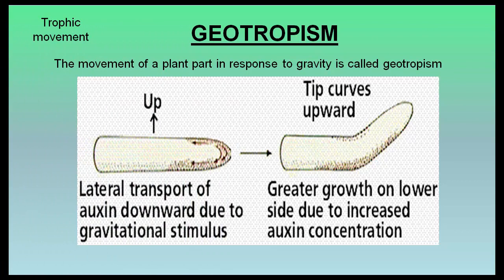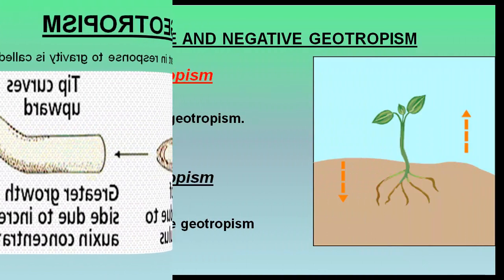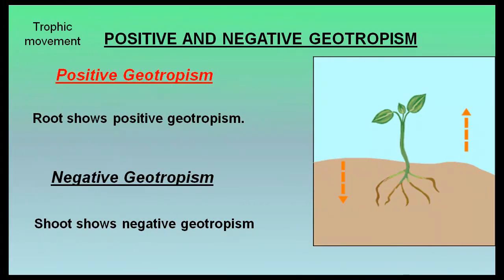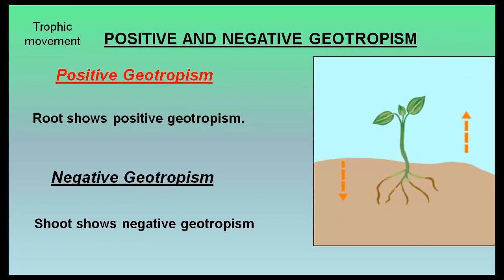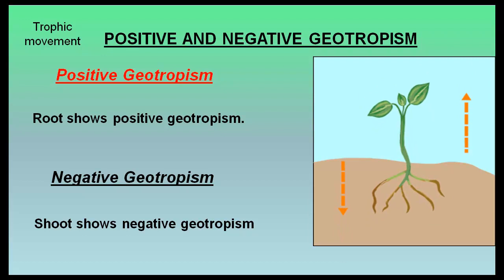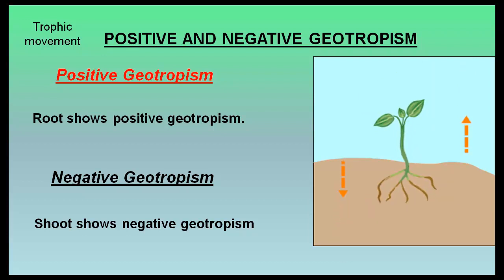Geotropism is the movement of a plant part in response to gravity. Roots show positive geotropism, while shoots show negative geotropism.